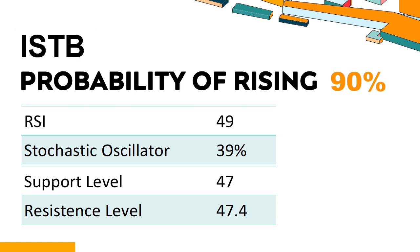ISTB's short-term support level is 47.1. If it falls below 47.1 during the session, it will have a chance to test 47.0. ISTB's short-term resistance level is 47.3. If it breaks through 47.3 during the session, it will look up to 47.4.